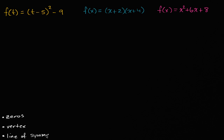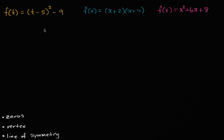In particular, to be more specific, the vertical line of symmetry, which will actually be the only line of symmetry for these three. So pause the video and see if you can figure out the zeros, the vertex, and the line of symmetry. The best way to learn this stuff is to do it yourself.